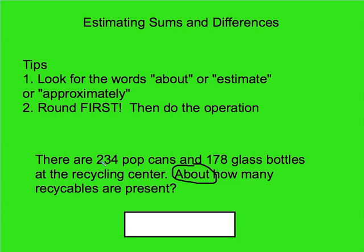There are 234 pop cans and 178 glass bottles, and I want to know how many there are altogether — how many are present. If I visualize that, there's 234 in one pile and 178 in the other pile, and my total would be when I put the two together. I want to round first and then do the operation. Since I have two parts, I'm going to be adding in this case.